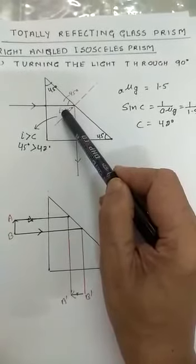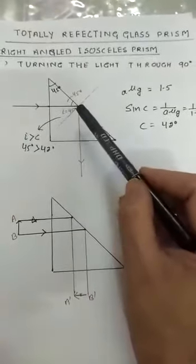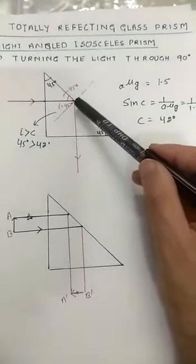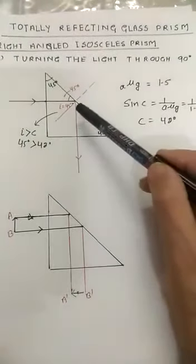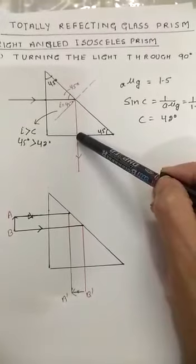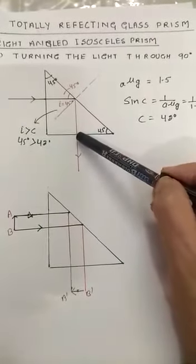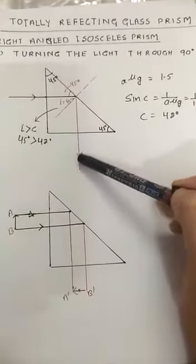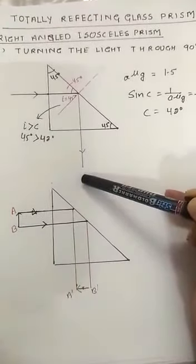This angle of incidence is greater than the critical angle. So naturally the ray will be totally internally reflected. It comes here, and here again the medium is changing. But the ray is incident normally and it will go along straight way.